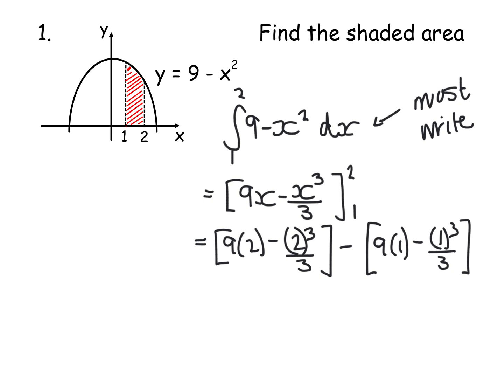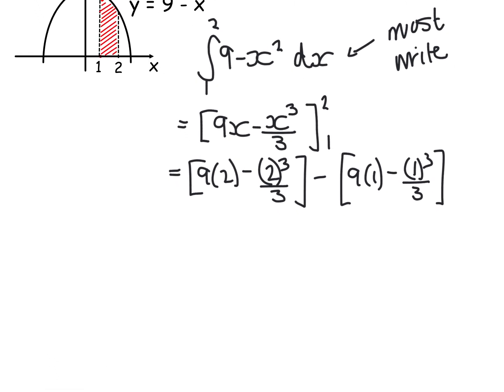Now, sometimes you might start substituting and calculating at the same time, but for notes, I'm putting in every single little step here. Now, this gives us 18, take away 8 thirds, minus 9, take away 1 third.